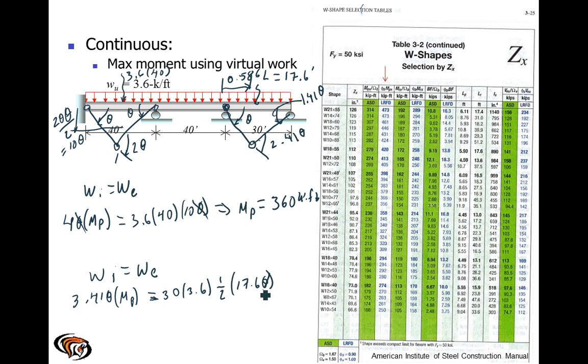So once again, since theta is a virtual rotation, we can get rid of that. And so we have that the plastic moment is going to be equal to about 278 kip-feet. And that is for the 30-foot span. So the first two spans have a required moment capacity of 360 kip-feet and the last span 278. Obviously, this is going to be the largest moment.